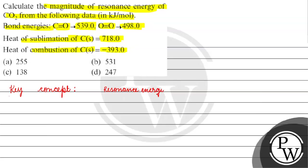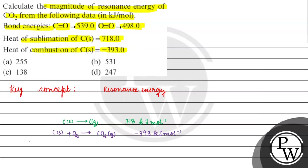The key concept for this question is resonance energy — it tells us how much more stabilized a molecule is. The heat of sublimation of carbon is 718 kJ/mol. For the heat of combustion: C(solid) + O₂ → CO₂(g), the heat released is -393 kJ/mol.